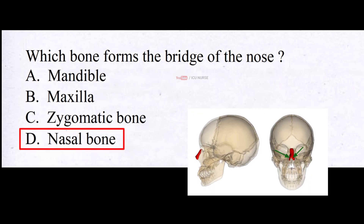The nasal bones are two small symmetrical oblong bones, each having two surfaces and four borders. Positioned in the mid-face at their junction, they form the bridge of the nose superiorly and anchor the upper lateral nasal cartilages inferiorly.